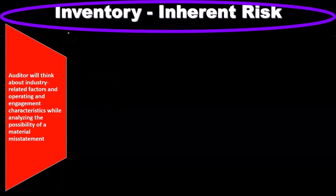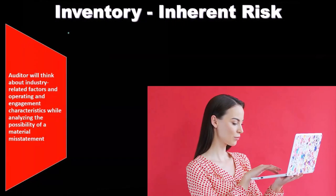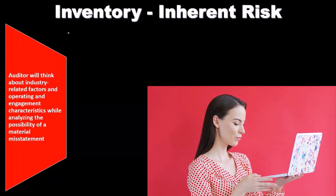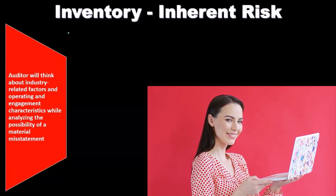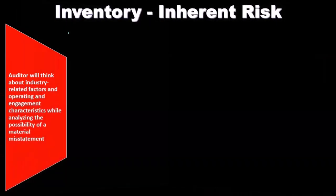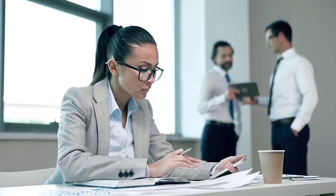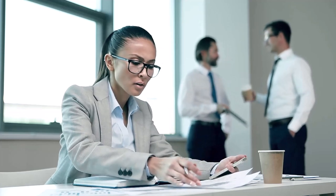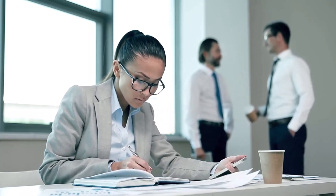Inherent risk is the risk that is just inherent within the process. If we were to remove the controls altogether, that would represent the inherent risk. Note that the business doesn't have a lot of control over inherent risk other than the fact that they chose to be in that business and took on whatever inherent risks relate to it. They then put in place internal controls to mitigate those inherent risks and the risk of material misstatement.